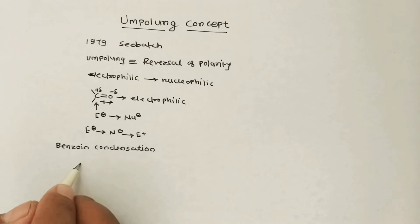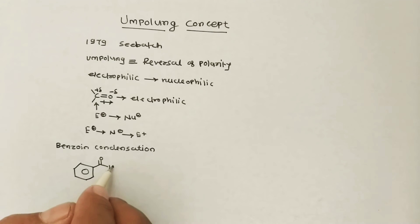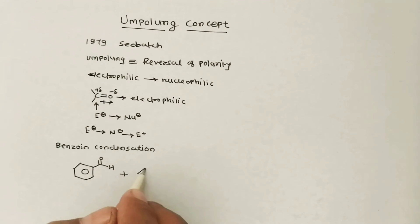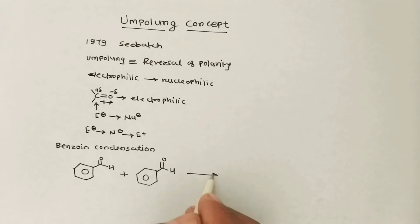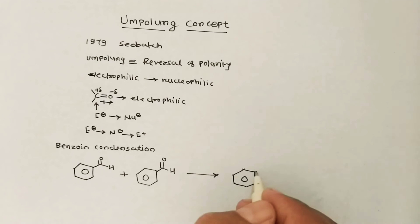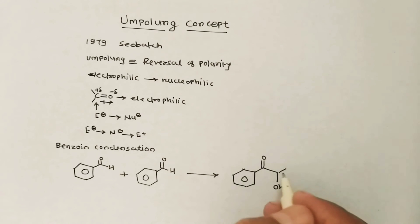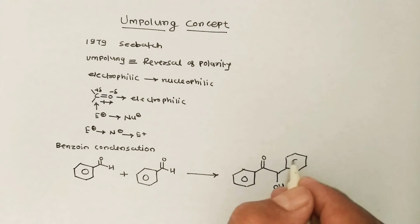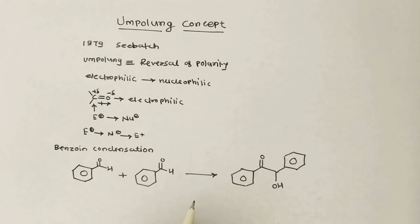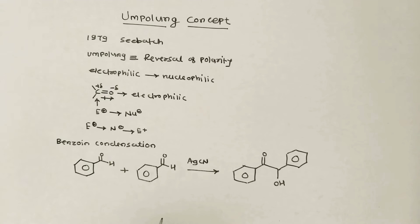In benzoin condensation, we know that a benzaldehyde molecule reacts with itself to form benzoin. It is a condensation reaction in which two carbonyl compounds — that is, aldehydes — condense with each other in the presence of silver cyanide (AgCN). Benzaldehyde is thus converted into benzoin.